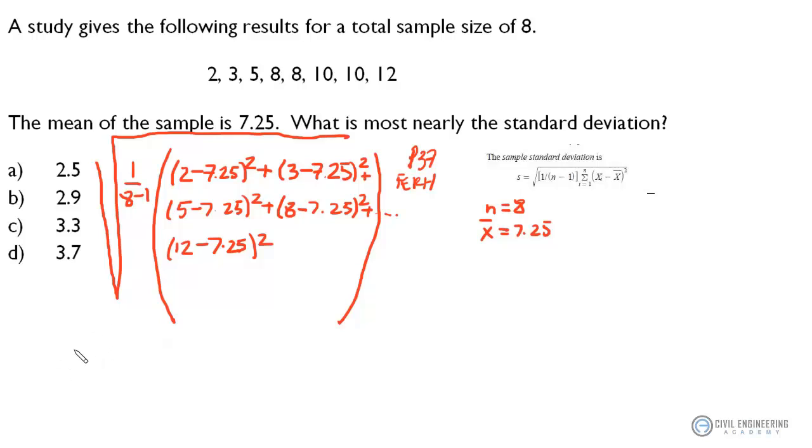So, let's consolidate all this. If we do that, we're going to have S equals the square root of 1 over 7 times if we consolidate all these terms we get 89.5